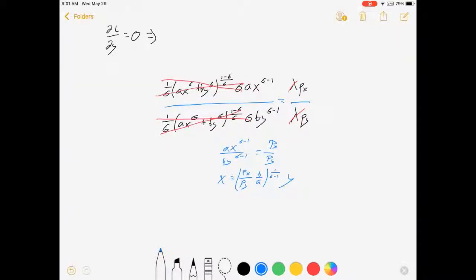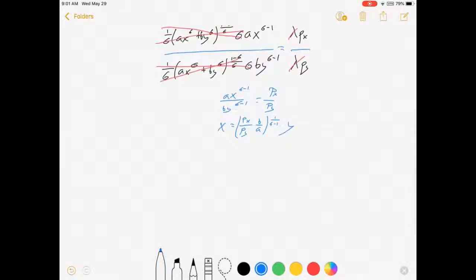All right, there we have it. That's your ratio of x to y. Now with that, our next step is to substitute this into the budget constraint. Our budget constraint was w equals px times x plus py times y.